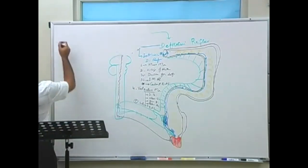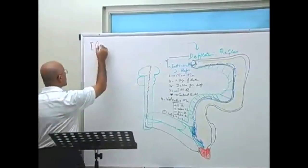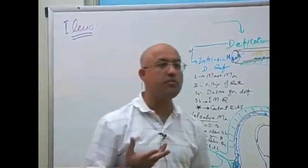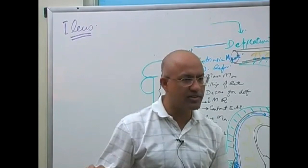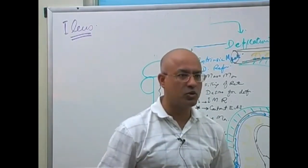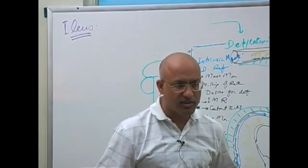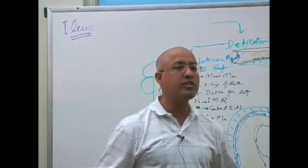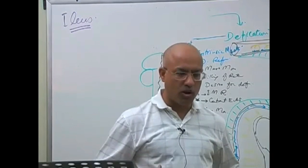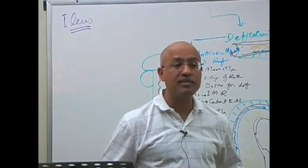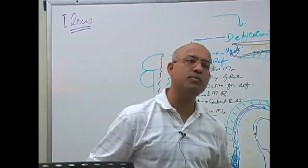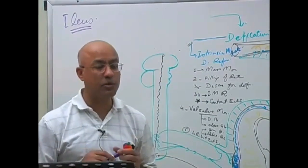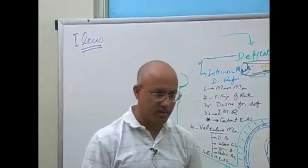Regarding disorders of GIT motility: number one is paralytic ileus, which occurs when the whole myenteric plexus in the GIT becomes paralyzed. This is seen after general anesthesia, after abdominal surgery where the GIT is manually handled, or in severe electrolyte imbalance, septicemia, or peritonitis. Anything that generally irritates the GIT can cause paralysis of the myenteric plexus and cessation of gastrointestinal movement. It typically recovers after some time.